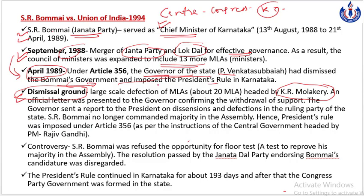20 MLAs ke large-scale defection ke baad SR Bumai did not have majority in the state assembly, aur as per the rules, woh CM ki position continue nahi kar sakta tha. Rules ke hisaab se yahan tak sab theek hai. To samasya kahan huyi? Ideally, Governor ko sabhi parties ke leaders ko - including SR Bumai - floor test ke liye invite karna tha. And floor test mein party ko ek aur moka diya jaata hai apni majority prove karne ka. SR Bumai ko Governor ne floor test ki opportunity nahi di.